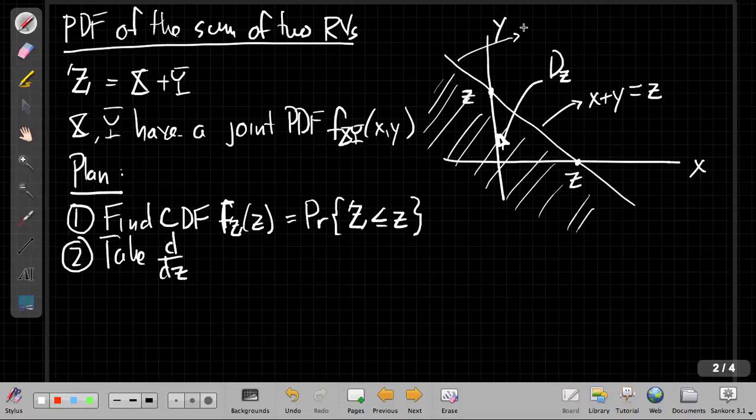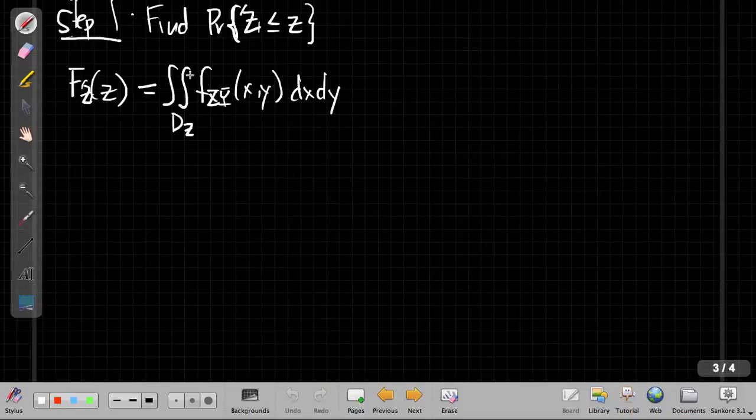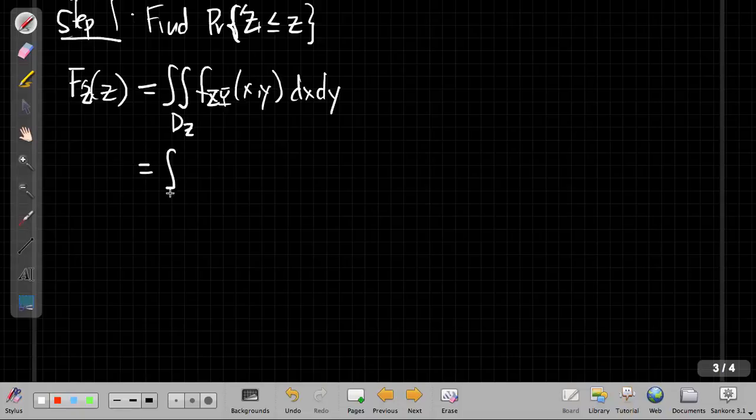Going back to that page, for each x we're going to integrate from minus infinity up until this point here. This is the line x plus y equals z. If I want to write it in the integral, the upper limit on y is equal to z minus x, if I just re-solve this equation.